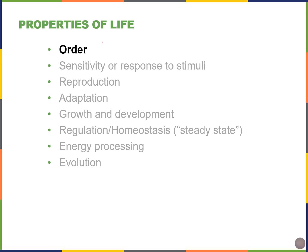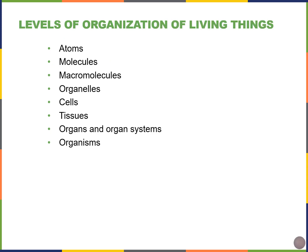Order is one of the properties of life, as living organisms are extremely organized. Looking at the organization of living things from small to large: we start with atoms, then molecules when two or more atoms combine. Macromolecules are large molecules such as carbohydrates, lipids, proteins, and nucleic acids like DNA. Inside the cell we have organelles — tiny functional units playing important roles. In larger organisms, groups of similar cells carrying out similar functions form tissues. Groups of different tissues form organs and organ systems, all within the organism.